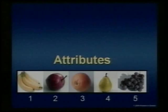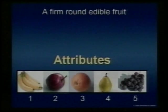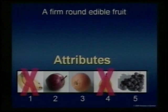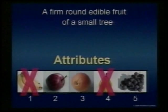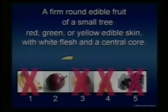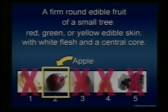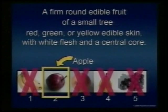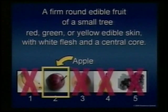Let's take an example. There are some fruits — let's look at some attributes. Number one: it has to be a firm, round, edible fruit. Does that leave anything out? Yes, it leaves out bananas and pears — they might be edible, but they're not round. Another attribute: it comes from a small tree. Does that leave anything out? How about grapes? And then: red, green, or yellow edible skin with white flesh and a central core — that leaves out the orange. So when you look at all those attributes, they clearly define one and only one type of fruit, and that's the apple. You leave any one of those attributes out, then we don't have a very clear distinction of an apple. That's what we mean by scientific definitions — be very clear and state exactly the attributes that are included and not included.